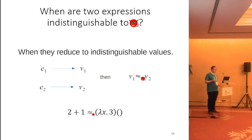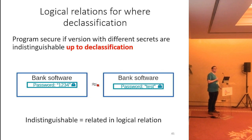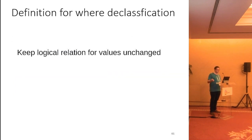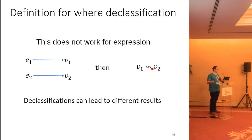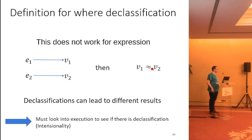What do we need to change to make this work for where declassification? The idea is basically the same: two programs with different secrets should be indistinguishable, but now indistinguishable up to declassification. We need to incorporate this 'up to declassification' aspect into our logical relations. The good news is we don't need to change anything for values — declassification doesn't happen in inert values. But for expressions, when we execute two programs there might be declassification, meaning we might get different results because we declassified different secret data. So we must be able to look into the execution, figure out if declassification is happening, and act accordingly.